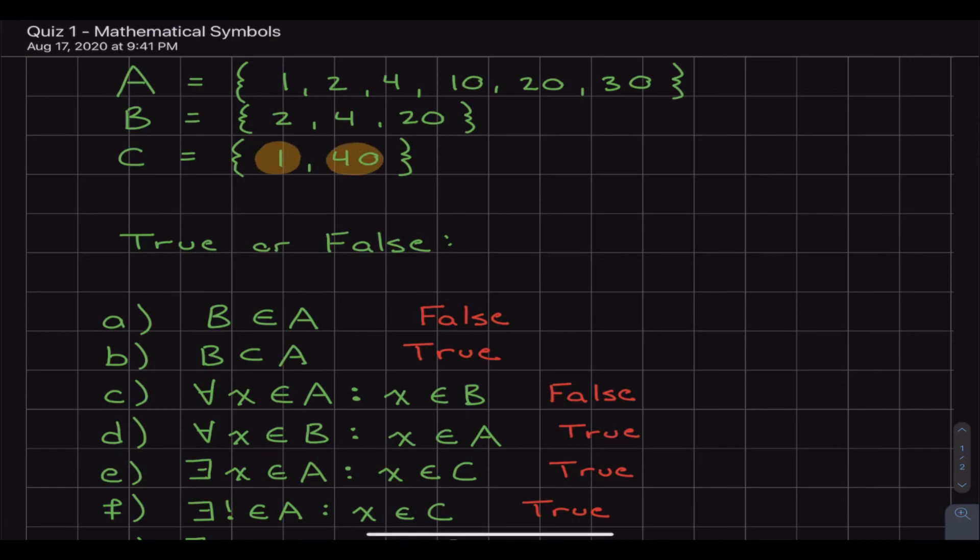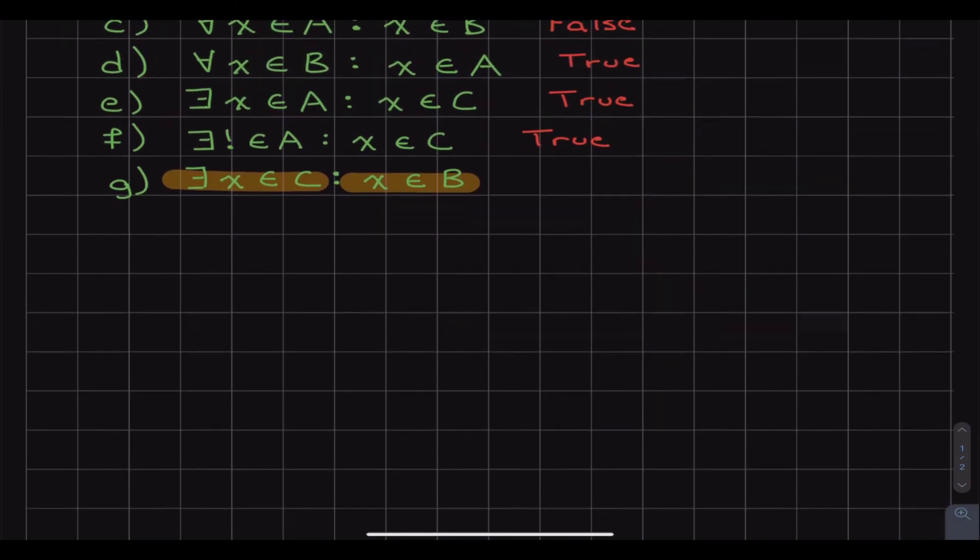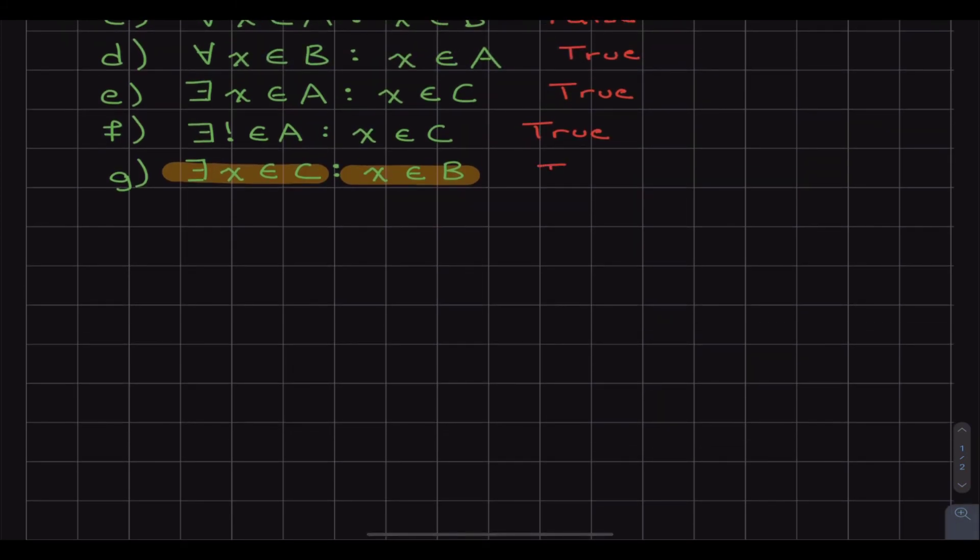And what the statement is saying is that one of those also exists in B. And if we look at B, we got a 2, a 4, and a 20, which none of those match C at all. So this statement right here is actually false because there is no element in C that also appears in B.